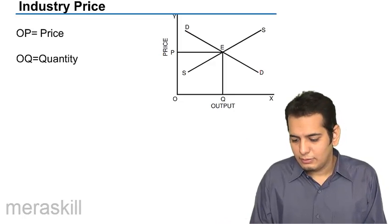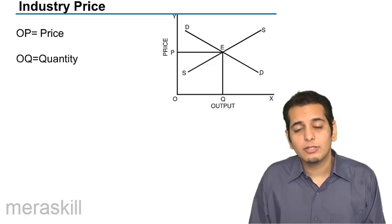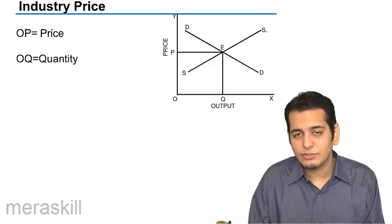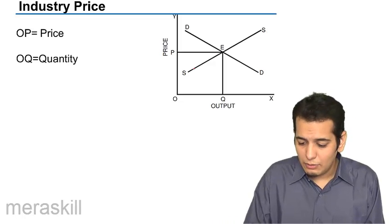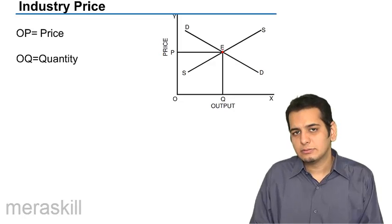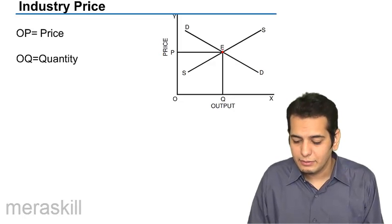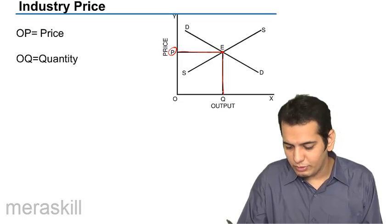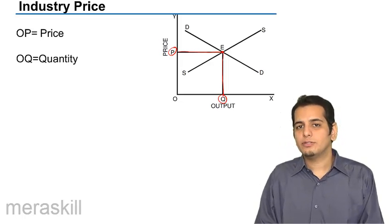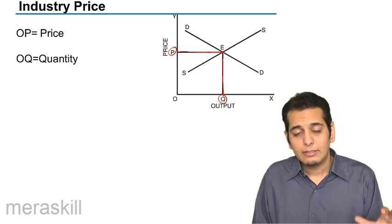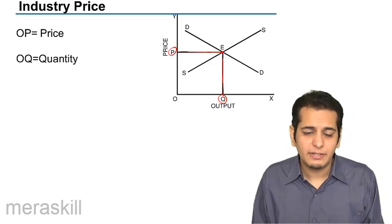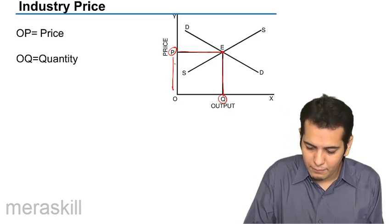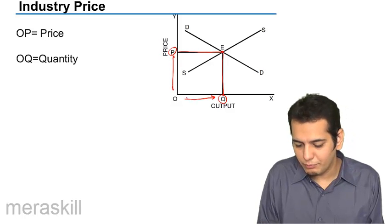In the picture given on your screen, DD is the demand curve and SS is the supply curve. Where both these curves meet, we get the equilibrium price, which is P in this case, and the equilibrium quantity, which is Q in this case. So we see that the forces of demand and supply set the equilibrium price and also the equilibrium quantity. The price in this case is OP and the equilibrium quantity is OQ.